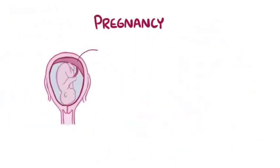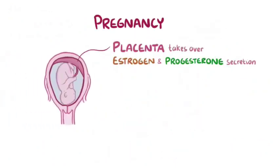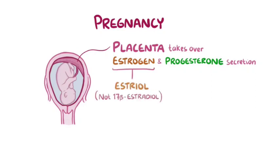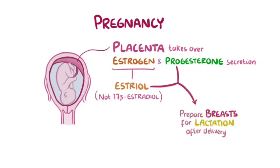During pregnancy, the placenta takes over estrogen and progesterone secretion, both of which are required to maintain the pregnancy. The placenta produces estriol rather than 17-beta-estradiol, so that becomes the dominant type of estrogen. During pregnancy, estriol and progesterone also help prepare the breasts for lactation after delivery.